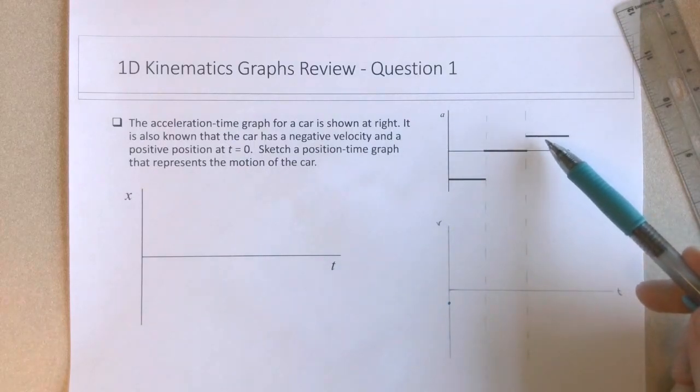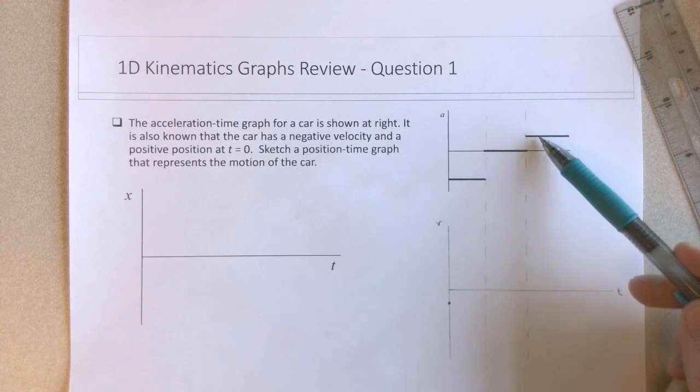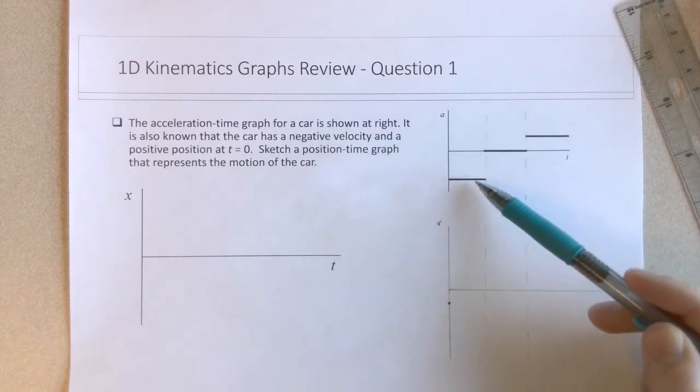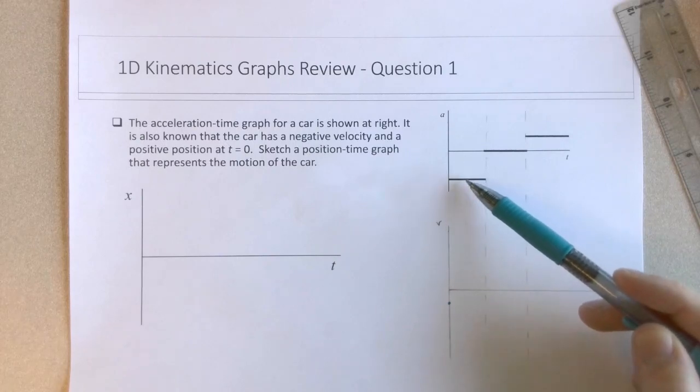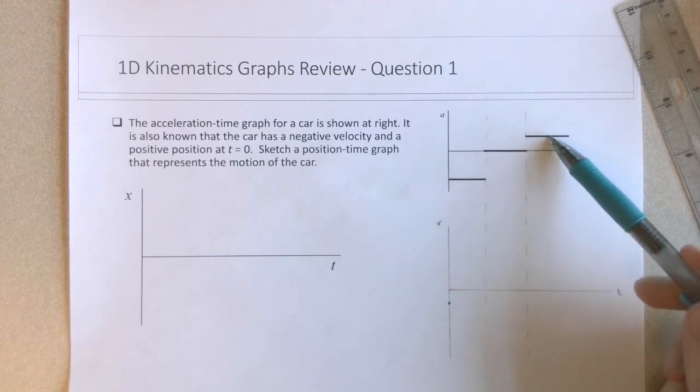There's a positive acceleration later. But this is not as large a magnitude as this one. So this should have a steep slope, steep negative slope, and it should have a less steep positive slope.